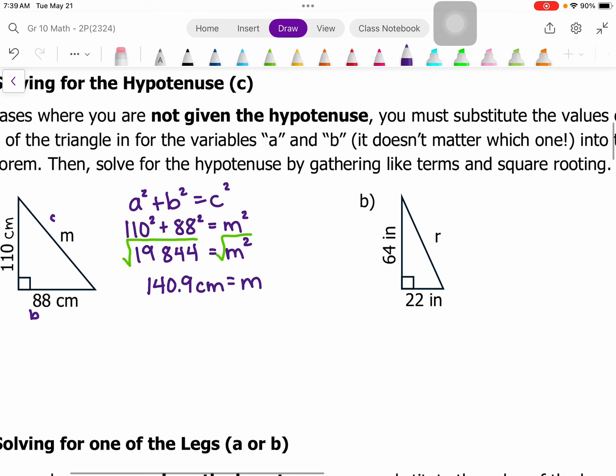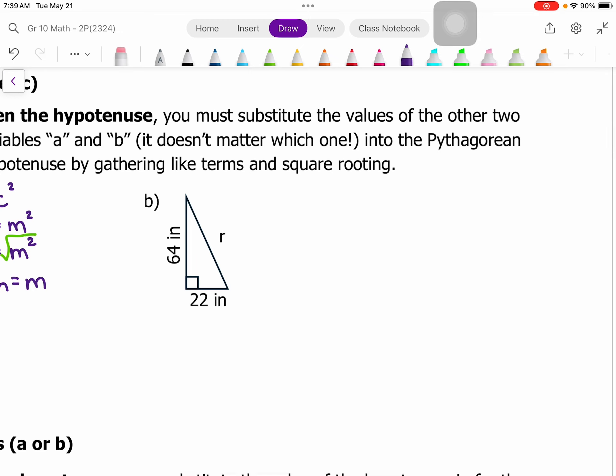We'll take a look at one more example that is similar. So if I say this side is a, this side is b, and this side is c, we have a squared plus b squared equals c squared. So 64 squared plus 22 squared equals r squared.